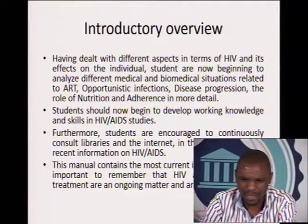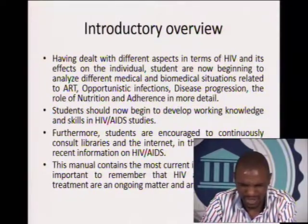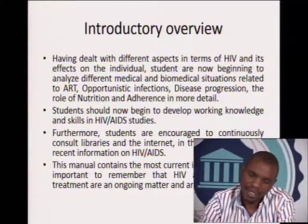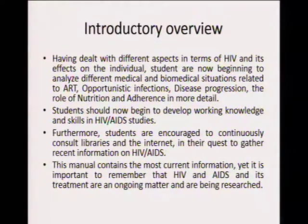Students should now begin to develop working knowledge and skills in HIV studies. Furthermore, students are encouraged to continuously consult libraries and the internet in their quest to gather recent information on HIV and AIDS. You can look at issues such as the 90-90-90 concept which is under Vision 2020 and also the concept of PrEP, which means pre-exposure prophylaxis — it has recently been introduced in Namibia and you need to continuously update yourself about that. This manual contains the most current information, yet it is important to remember that HIV and AIDS and its treatments are an ongoing matter and are being researched, so you need to stay ahead of the game.